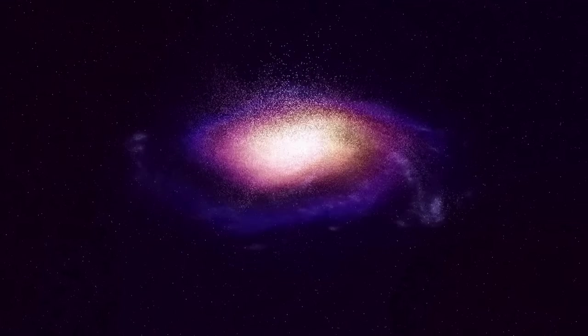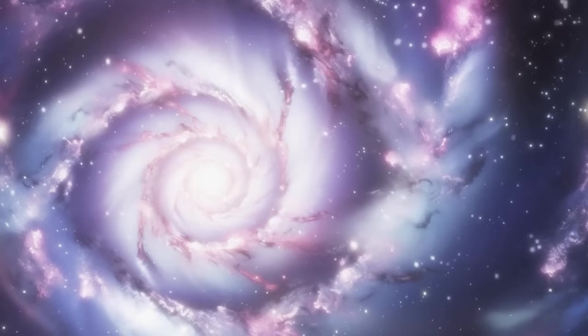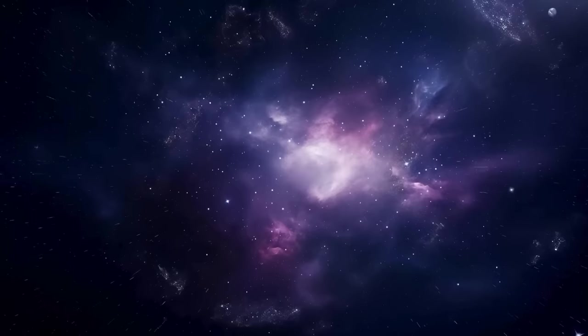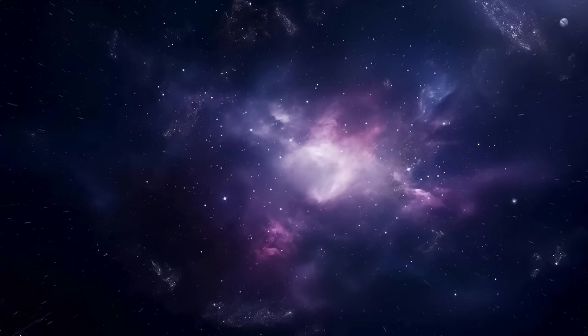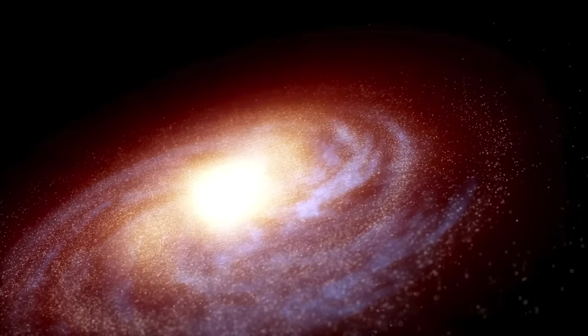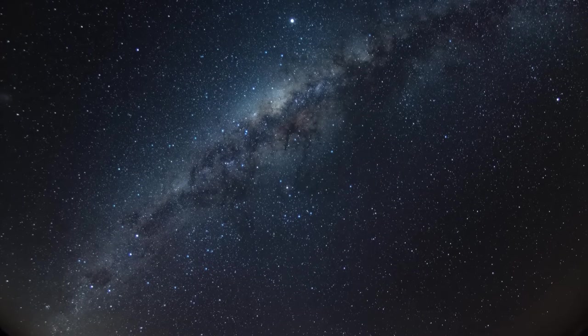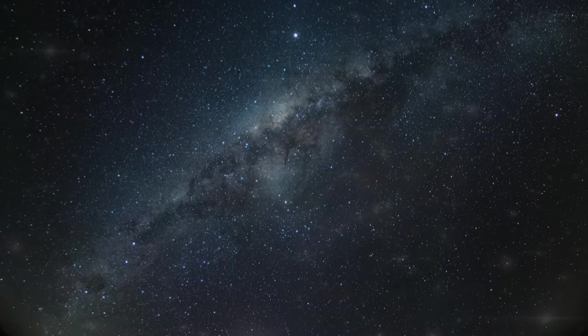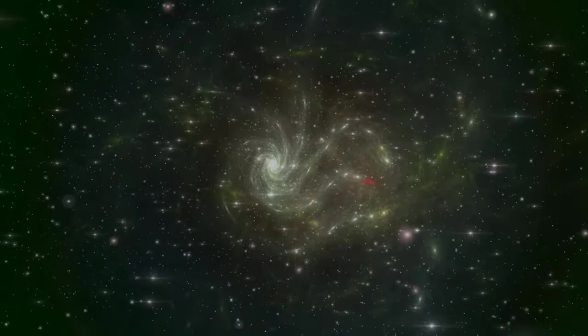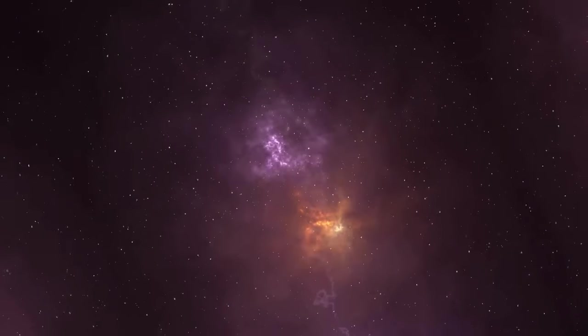So what does the local group look like? On one end, you've got the Milky Way and its bunch of satellite galaxies. On the other end, there's the Andromeda galaxy with its collection of satellites. The distance between these two ends is about 3 million light years, and they're heading toward each other at a speed of 123 kilometers per second. Both the Milky Way and Andromeda are spiral galaxies, and they are the big shots in the local group, each one containing around 1 trillion times the mass of our sun.